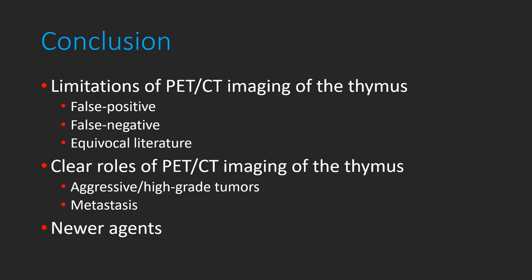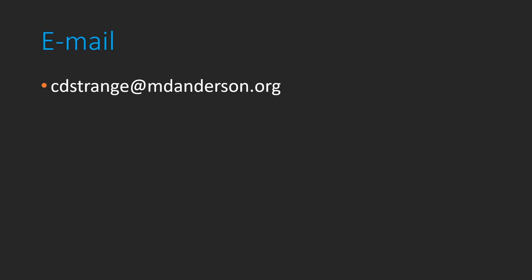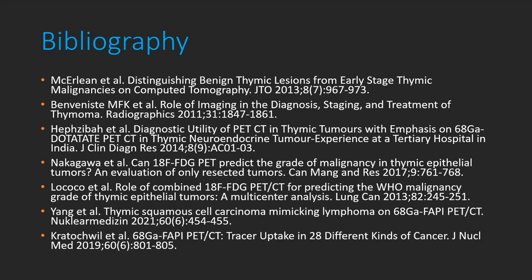In conclusion, PET CT has several known limitations when imaging the thymus, including false positive results from infection, inflammatory processes like fibrosing mediastinitis, thymic hyperplasia, and the inability to differentiate between various malignant prevascular masses. There are also false negative results from low-grade thymomas that don't appear on PET imaging. The literature remains equivocal, but PET CT is useful imaging aggressive, high-grade metabolically active tumors for detecting nodal, distant, and occult metastasis, and for guiding biopsies. Newer PET agents will continue to fine-tune thymic PET imaging in the future.